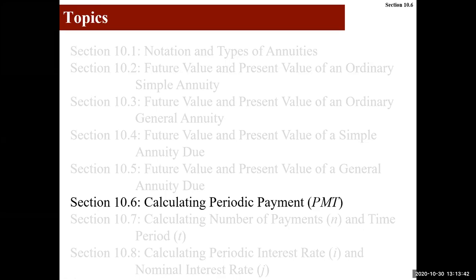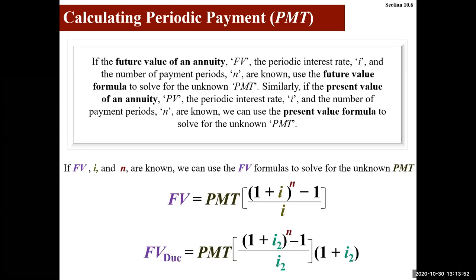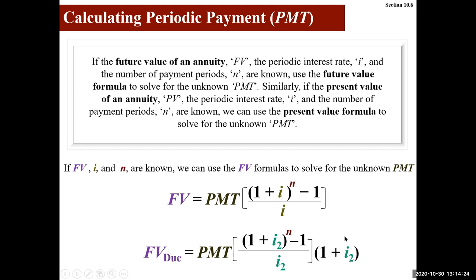Our next topic is how to calculate the periodic payment for different types of annuities. When we have the future value of an annuity or an annuity due, we've typically known the payment, the periodic rate, and N, the number of compounding periods. We can switch this around so that we don't know the payment but do know the future value. We plug in the future value, the periodic rate, and number of compounding periods, and divide both sides by those terms to isolate for the payment.